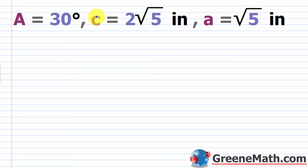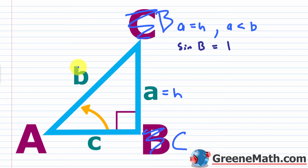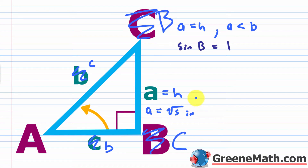For this example, A is 30 degrees, c equals 2√5 inches, and a equals √5 inches. Note that I used c instead of b here — just adjust accordingly in the diagram. To verify that a equals H, we compute H equals c times sine of A, which is 2√5 times sine of 30 degrees, which is 2√5 times one-half, giving H equals √5 inches — exactly equal to a.